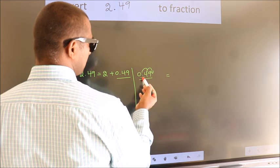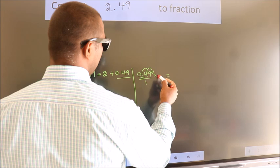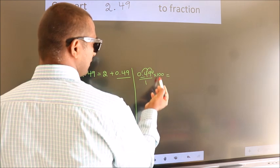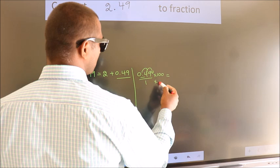To move this decimal after 2 numbers, for that we have to multiply it with 100. Whatever we are multiplying in the numerator, in the denominator also do the same.